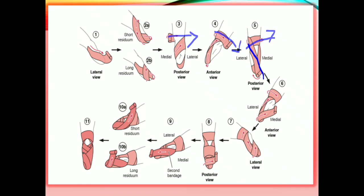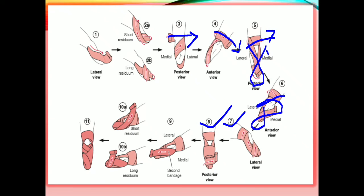After the anchoring turn, the bandage is brought back around the opposite tibial condyle and then down to the distal end of the limb. From here we start the figure-of-eight pattern — bringing it across, forming the eight shape, then going from the anterior to the posterior aspect and again forming the eight. You can check this out in diagrams five, six, seven, and eight as the figure-of-eight pattern develops.